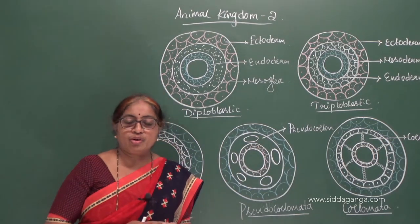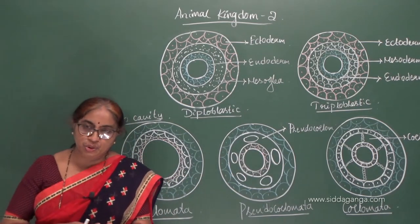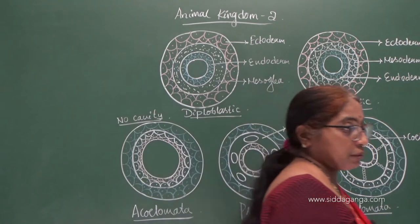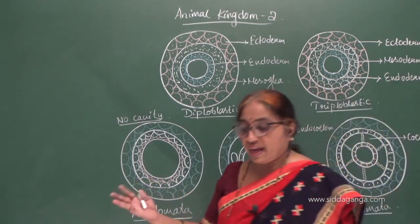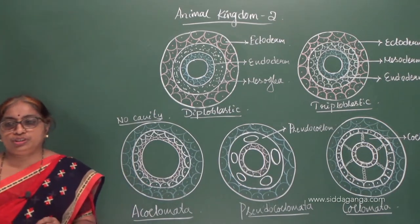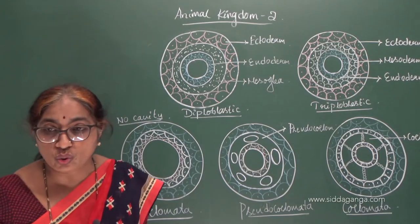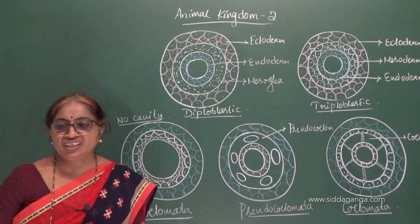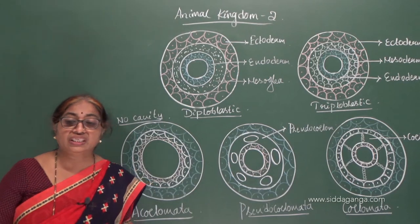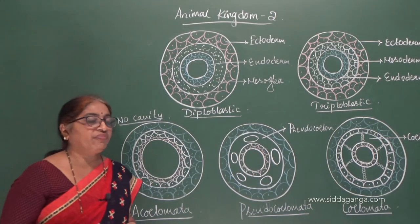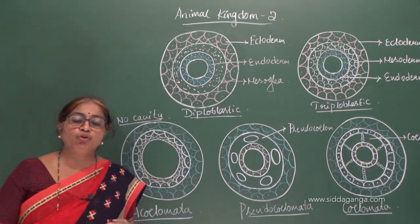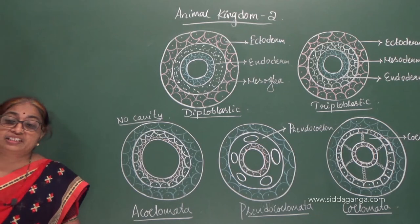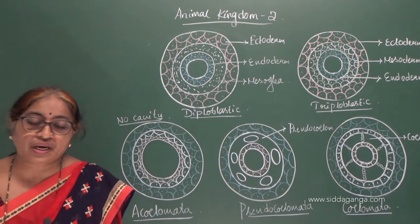Based on cellular organization and the digestive system, the animal kingdom is classified. Based on the circulatory system, it is classified into two types: open type and closed type. In the open type, blood pumped by the heart flows in the spaces between the tissues — seen in arthropods, molluscs, and echinoderms. In the closed circulatory system, the heart pumps blood through blood vessels or blood capillaries.